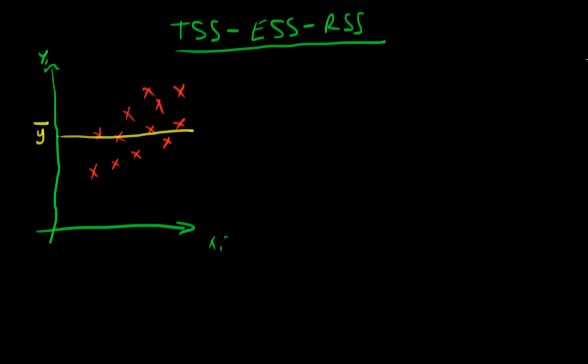We can think about the total amount of variance in our dependent variable that we're trying to explain as being the sum of all the distances of points, or the vertical distances of points, from y bar.